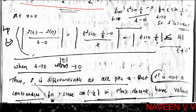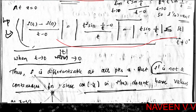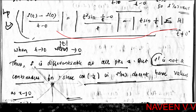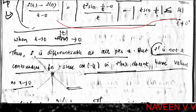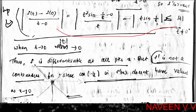Therefore f is differentiable at x = 0 with f'(0) = 0. However, f'(x) is not a continuous function at x = 0, because the term cos(1/x) does not have a limit as x→0. So f is differentiable everywhere but f' is not continuous at x = 0.